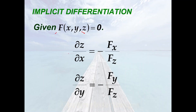Then the partial of z with respect to x equals the negative of the partial of f with respect to x over the partial of f with respect to z. And the partial of z with respect to y equals the negative of the partial of f with respect to y over the partial of f with respect to z. These equations can be derived by applying the chain rule — please remember them.